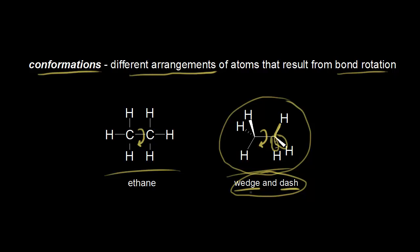This is easiest to see with a model set. Up next I have a video where I have a model set of ethane, and I rotate around the carbon-carbon bond so we can see different conformations. I'm going to make these hydrogens green in the video, so those green hydrogens are attached to the front carbon. And then we have hydrogens attached to the back carbon that I will make white. Let's watch the video and look at the different conformations of ethane.